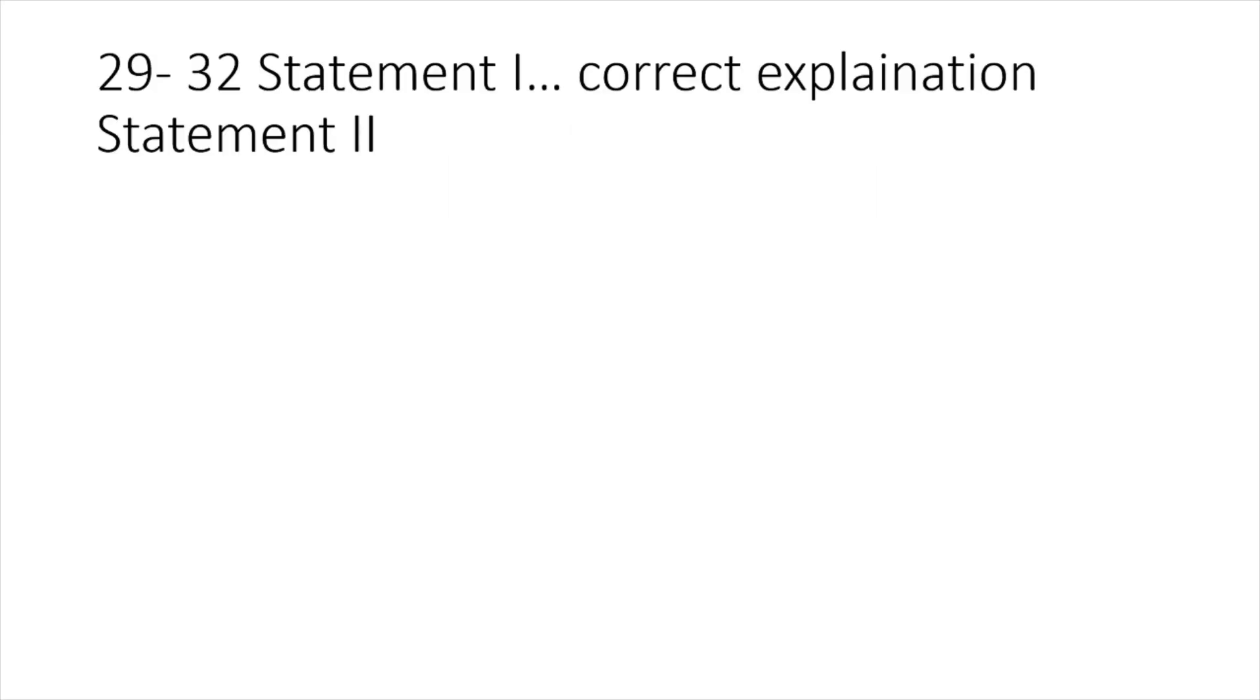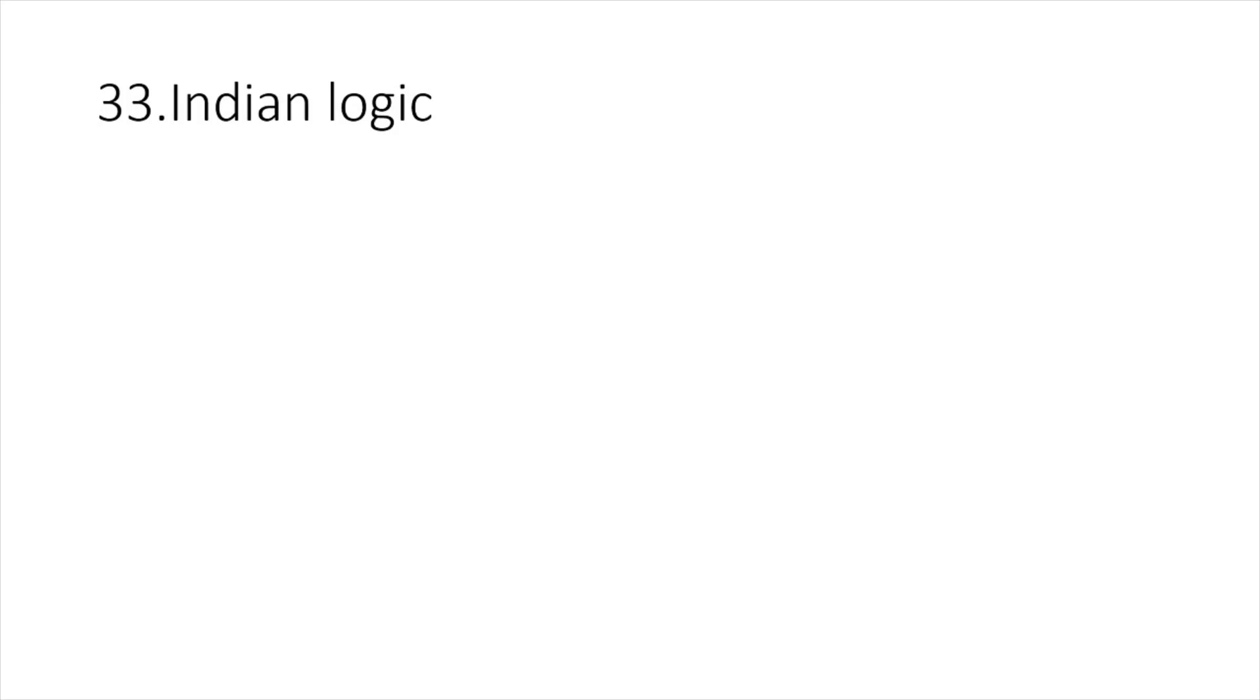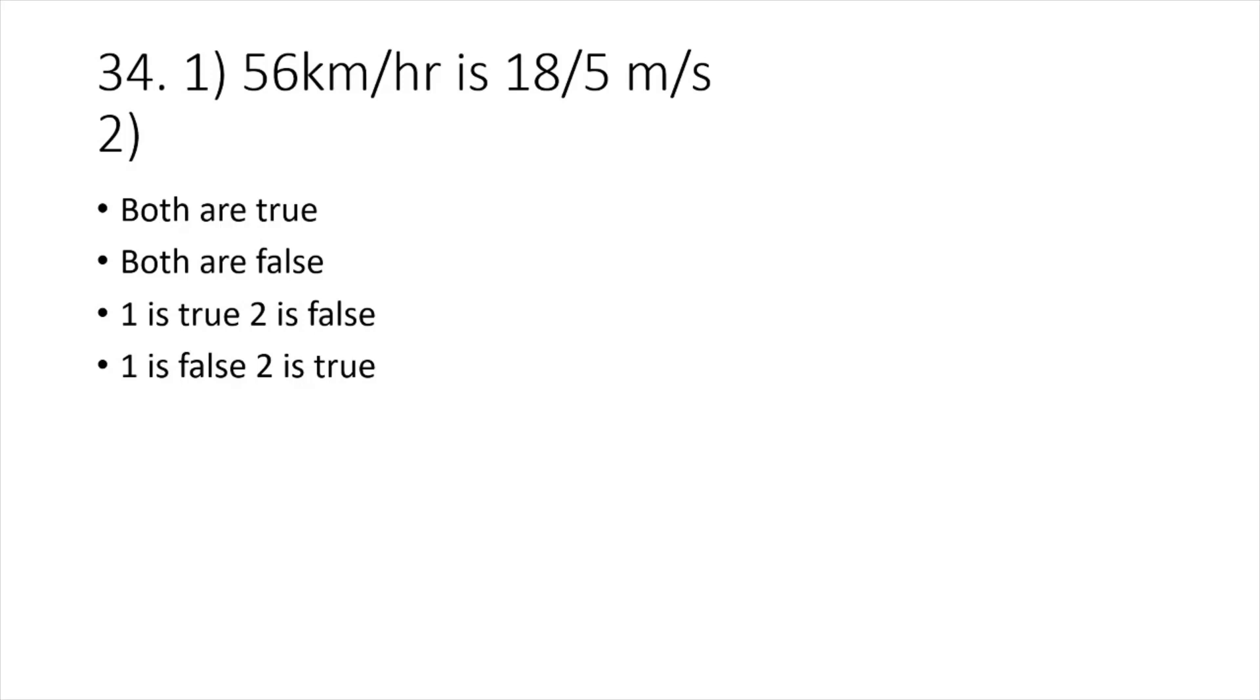Questions 29 to 32 are quite difficult to recall because they are given two statements that might be related or not related, and one is the correct explanation of another. Three to four questions are like this. Then one question is based on Indian logic. Question 34: again, two statements are given. First one is 56 km per hour is 18/5 m/s, and that was the wrong answer given. So statement one is false, and there is only one option for statement one is false, so it is simple to guess.